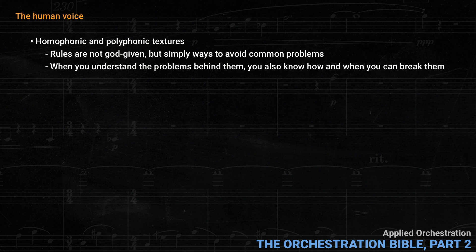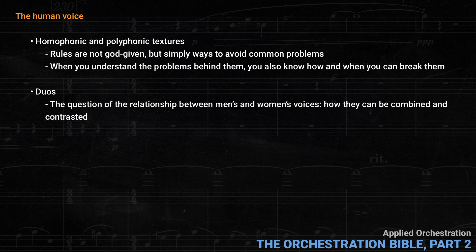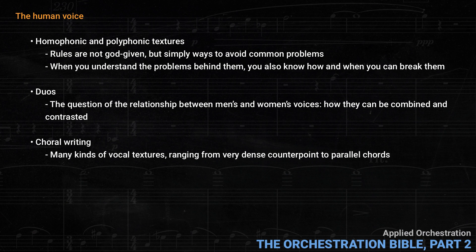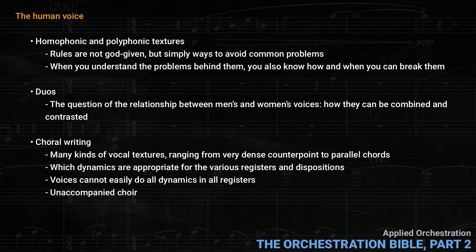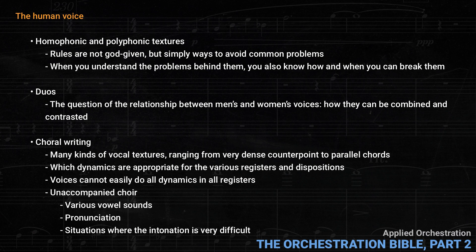After this introduction to vocal textures, he discusses duos like tenor and soprano, or soprano and baritone, bringing up the question of the relationship between men's and women's voices and how they can be combined and contrasted. So far all the vocal examples have been of soloists. Koechlin then moves on to choral writing. The examples go back as far as the 13th century and include many kinds of vocal textures, ranging from very dense counterpoint to parallel chords, as well as which dynamics are appropriate for various registers. This is important since, unlike strings, voices cannot easily do all dynamics in all registers. For example, having the tenors above the altos will usually make them more prominent. There's also a section about writing for unaccompanied choir, a cappella, and a discussion of various vowel sounds, pronunciation, and situations where intonation is very difficult, including an example from Schoenberg.